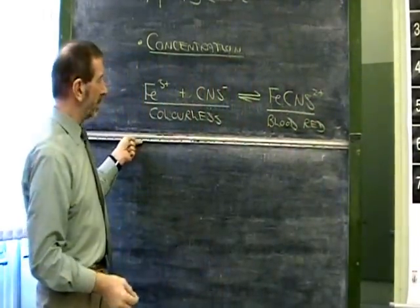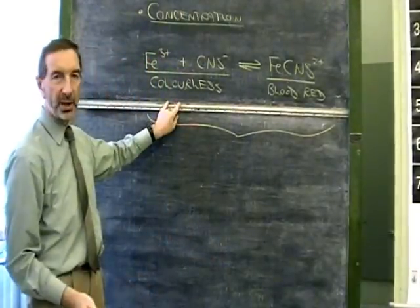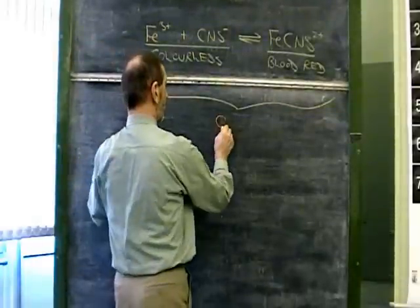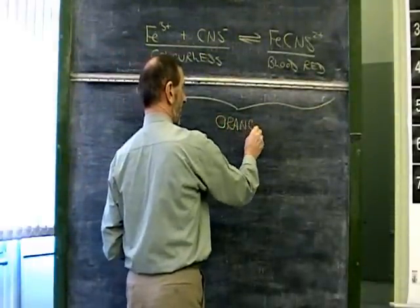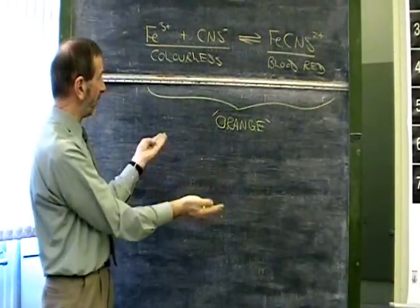If you mix them up, you can end up with a situation which is something in between. It's not blood red and it's not colorless, it's more of an orange color. I guess we could say that when we've got orange, it's kind of half and half, it's somewhere in between.